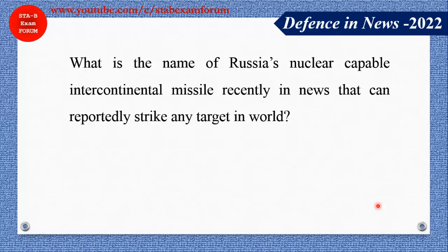What is the name of Russia's nuclear-capable missile that can reportedly strike any target in the world? It is basically an intercontinental ballistic missile. You must have heard this name during the Russia-Ukraine war. Its name is Sarmat, also known as Satan 2. This is a top-level, difficult question — make a note of it.